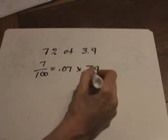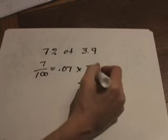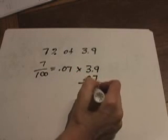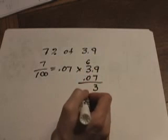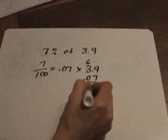Put 0.07 down here. 9 times 7 is 63. Carry the 6. 3 times 7, 21, plus 6, 27.